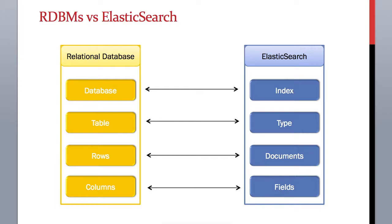Instead of a table, we have something called a type, and in place of rows or records in an RDBMS table, we have documents inside Elasticsearch.